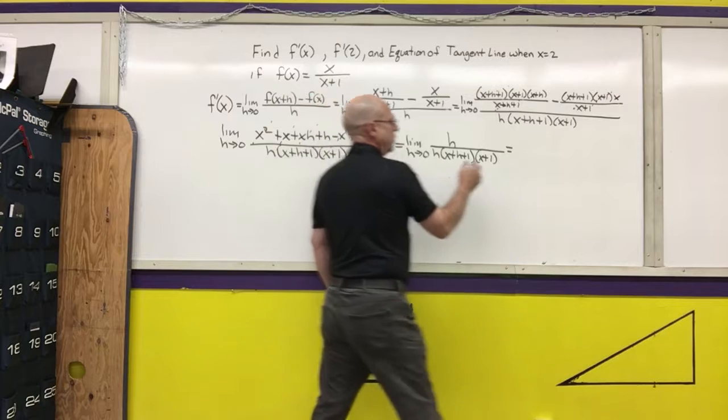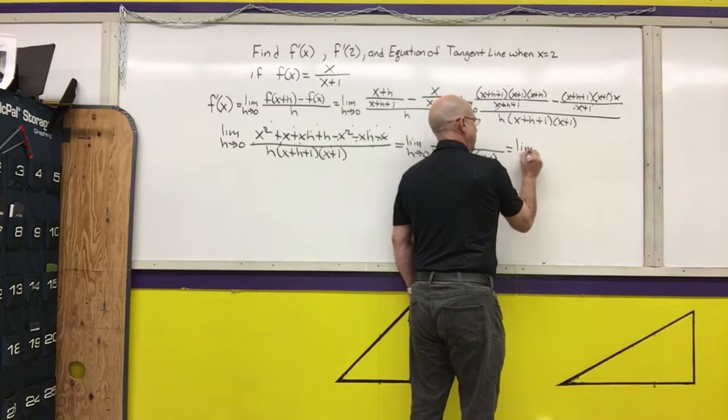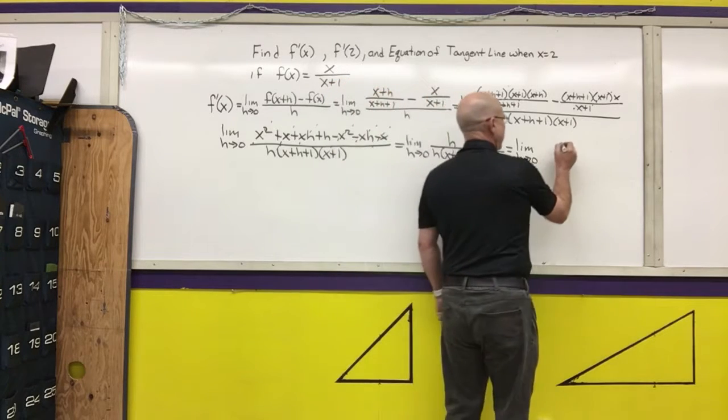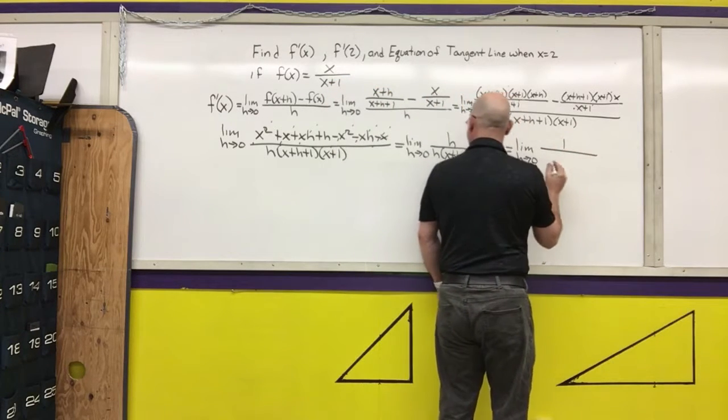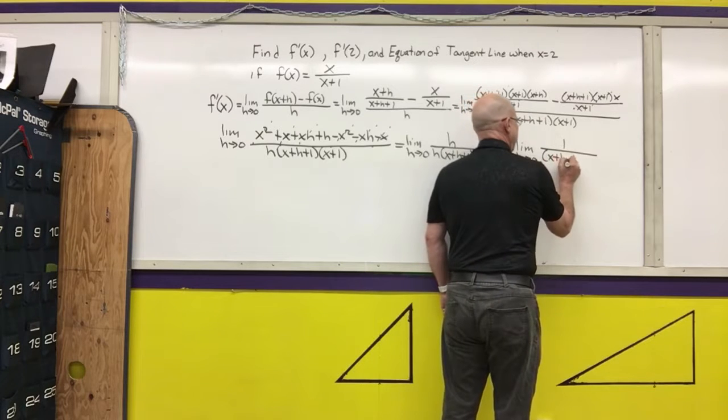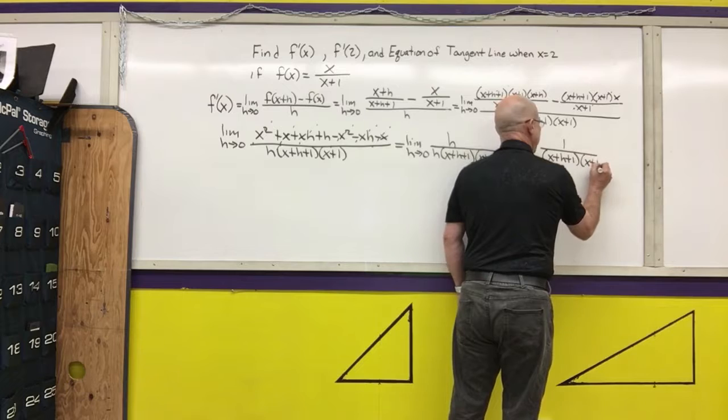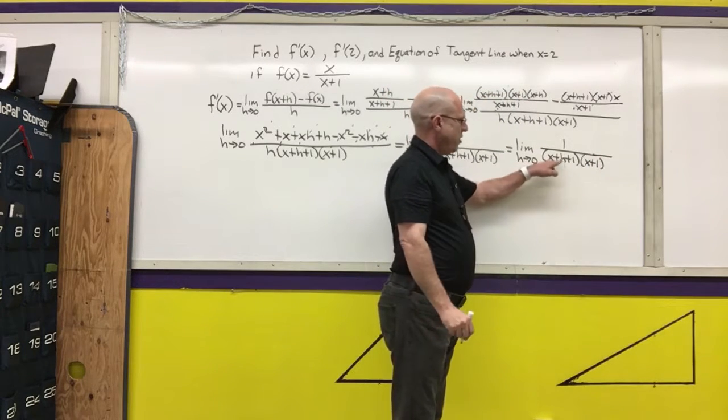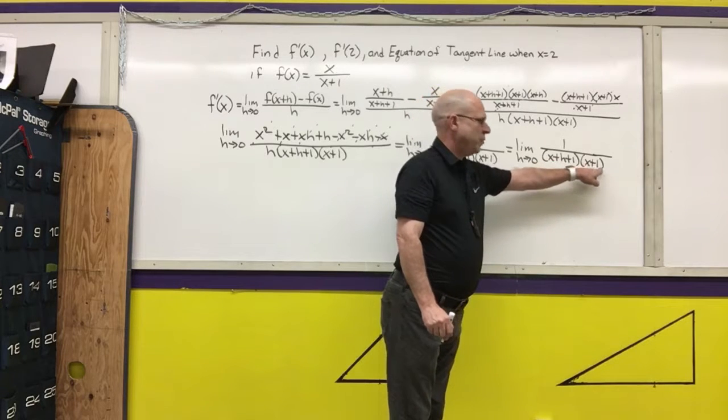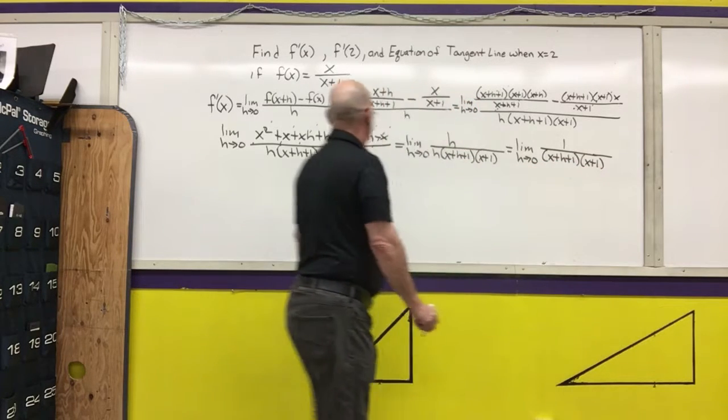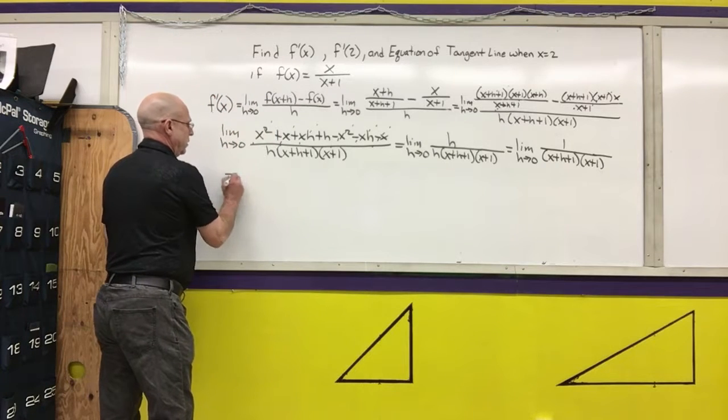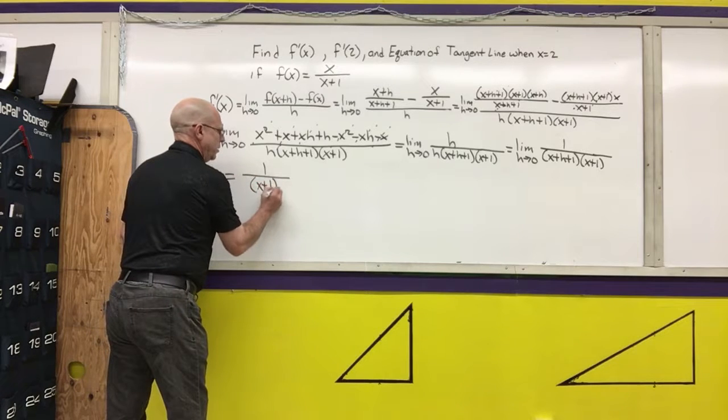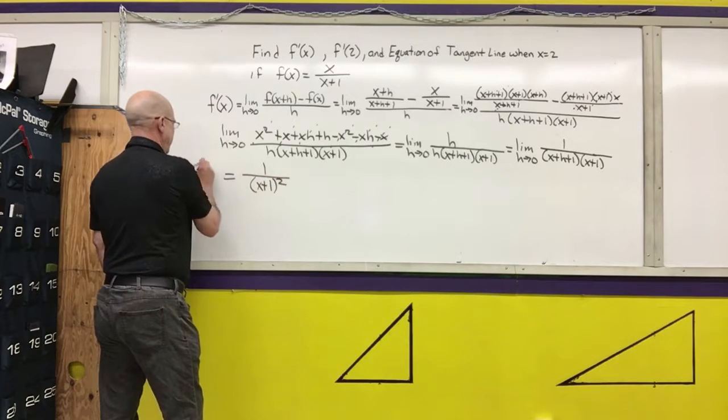h over h is 1. So I get the limit as h approaches 0 of 1 over x plus h plus 1 times x plus 1. Now I can let h go to 0. If I let h go to 0, I'm left with x plus 1 times x plus 1, which is x plus 1 quantity squared. So I end up with 1 over x plus 1 quantity squared, and this is f prime of x.